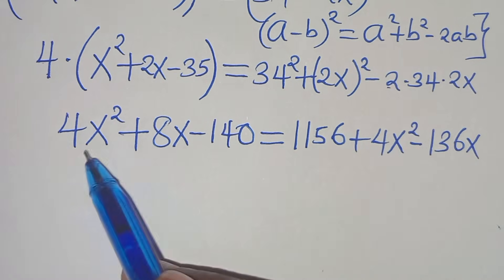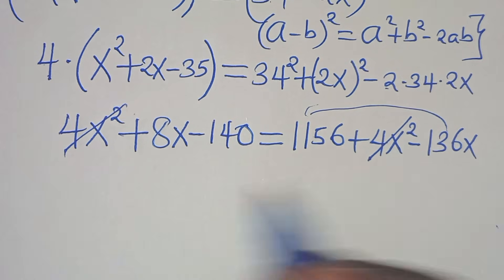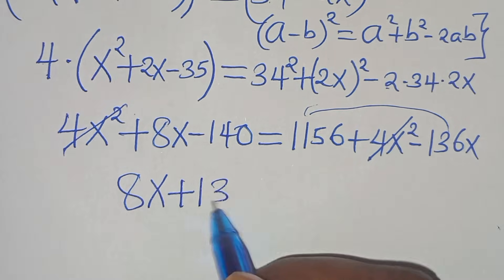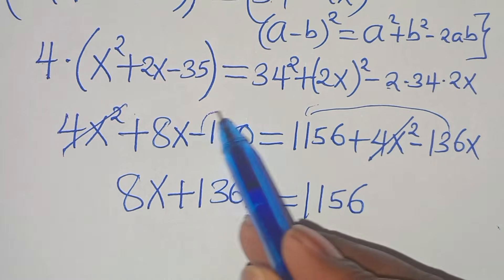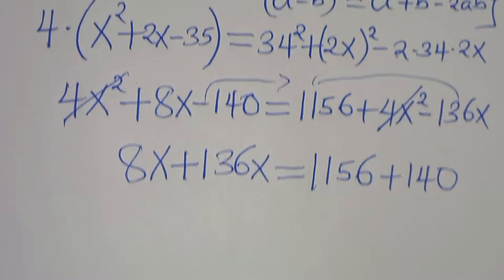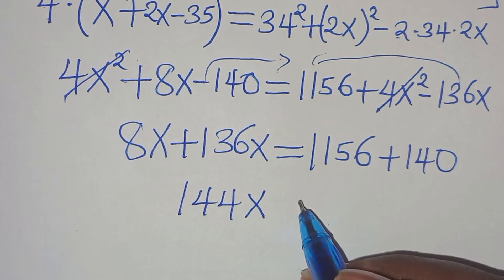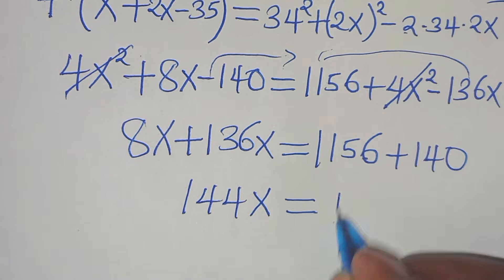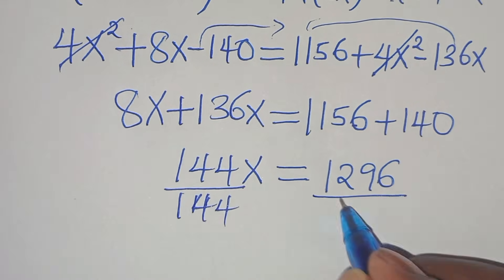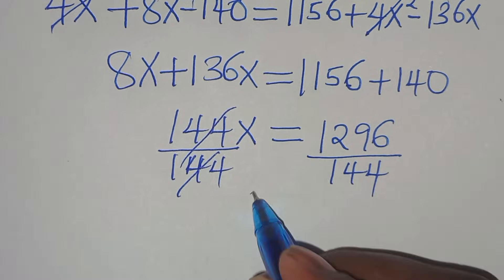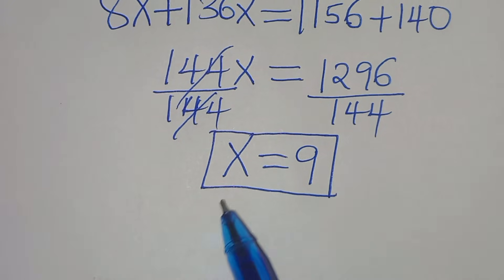The 4x squared terms cancel on both sides. Taking minus 136x to the left: 8x plus 136x equals 1156. Taking minus 140 to the right: 144x equals 1156 plus 140, which is 1296. Dividing both sides by 144, we get x equals 9. So the value of x is equal to 9 by applying Method 1. Let's proceed to Method 2.